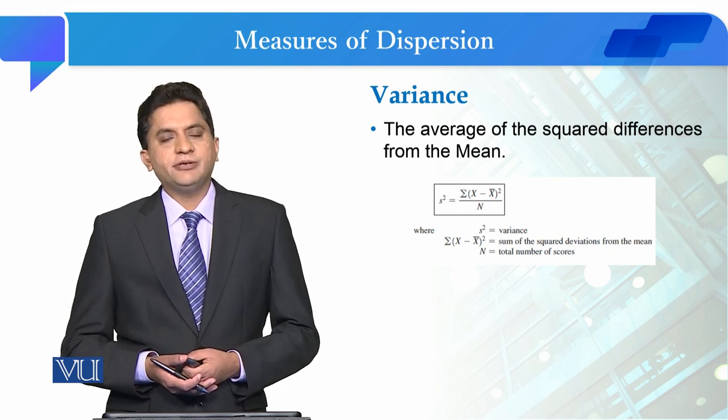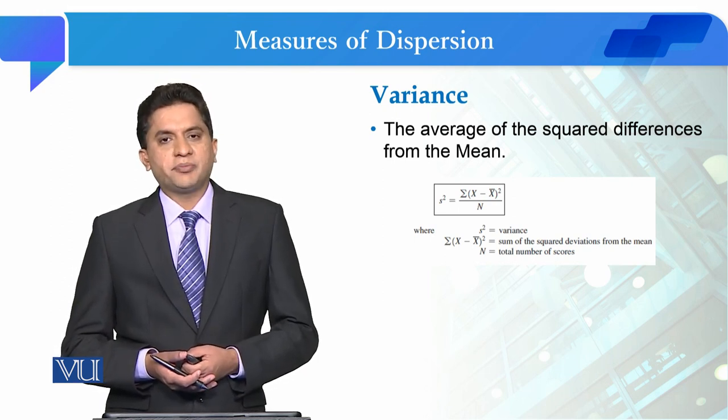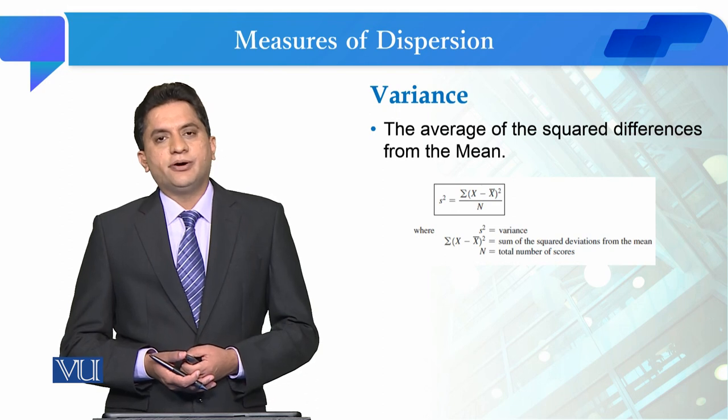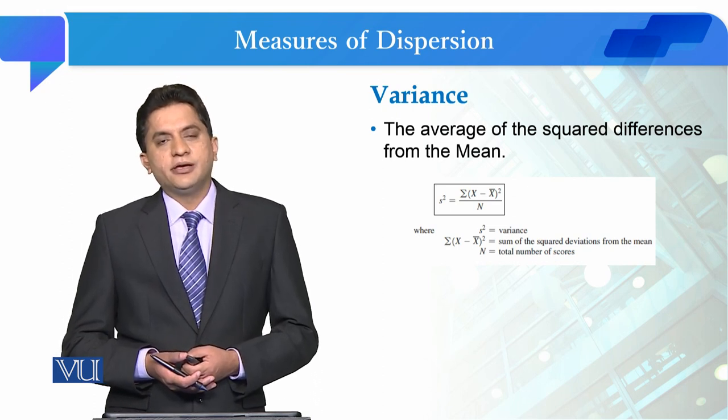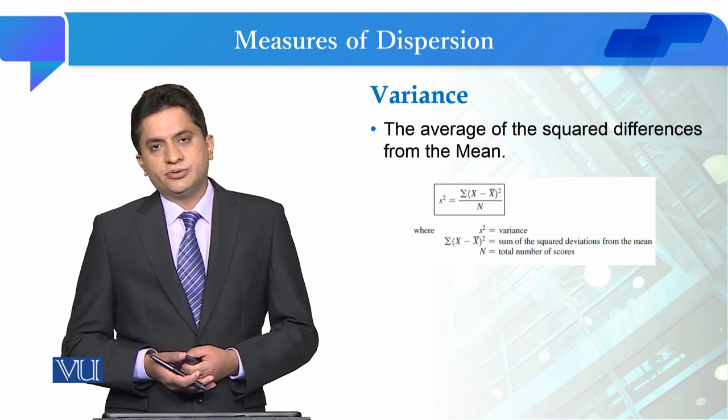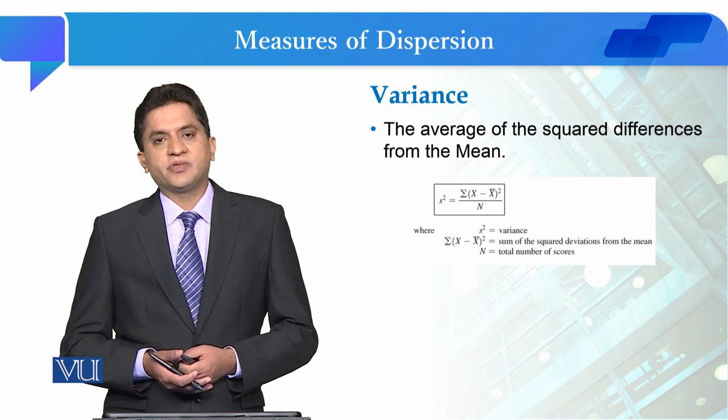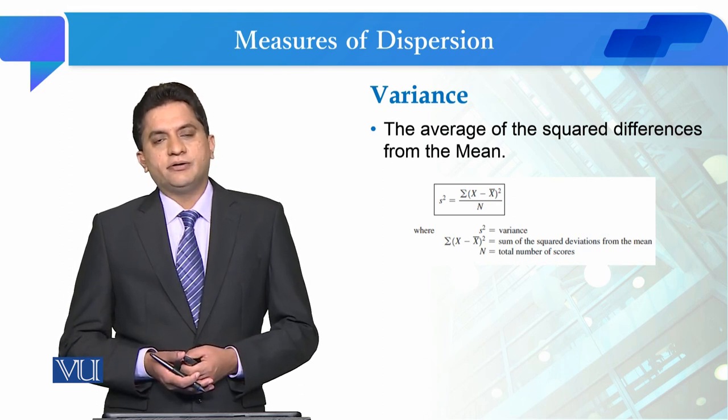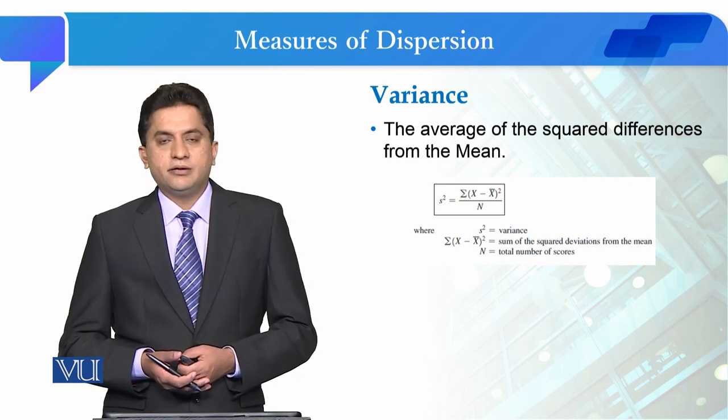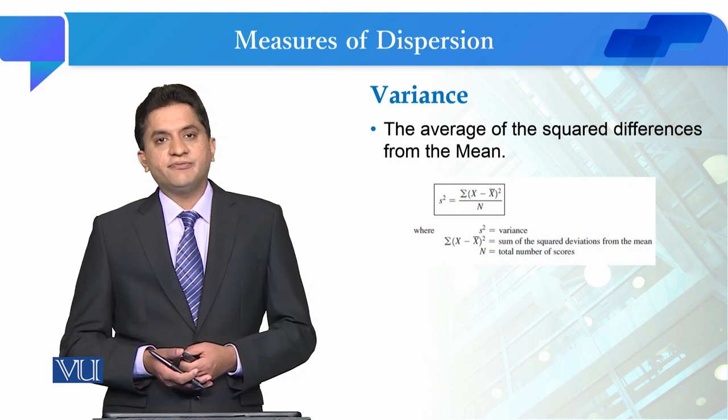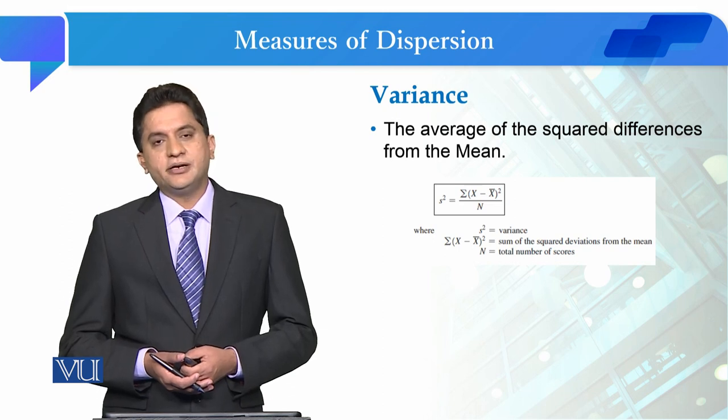When we studied mean deviation, we studied a property where the summation of x minus x bar is always zero. This is why we study variance in relation to mean deviation in order to better understand dispersion and calculate the value.